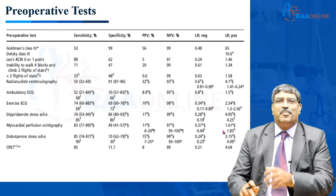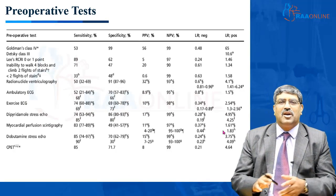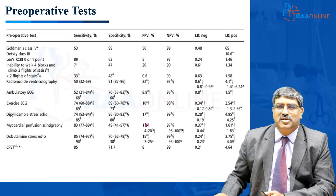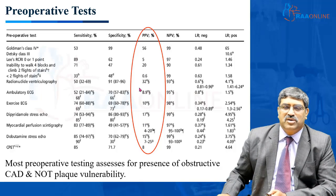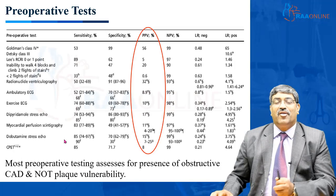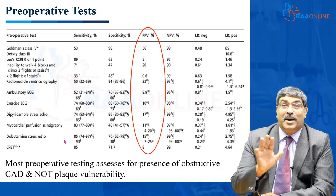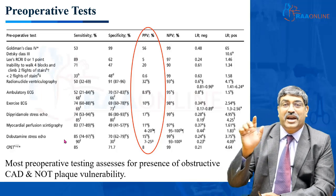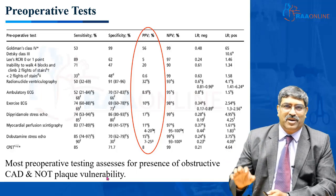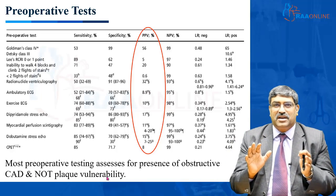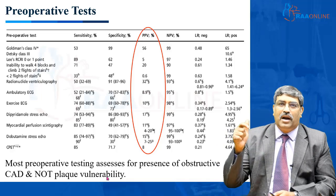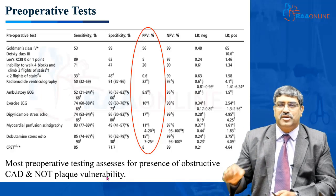Preoperative tests may have good sensitivity, specificity, and negative predictive value, but look at the positive predictive value — almost none exceed 20 percent except Goldman Class 4. This is because preoperative testing can detect that a patient has coronary artery disease, but cannot predict how the patient will behave intraoperatively. They assess the presence of obstructive disease but not plaque vulnerability — that is where the challenge lies.